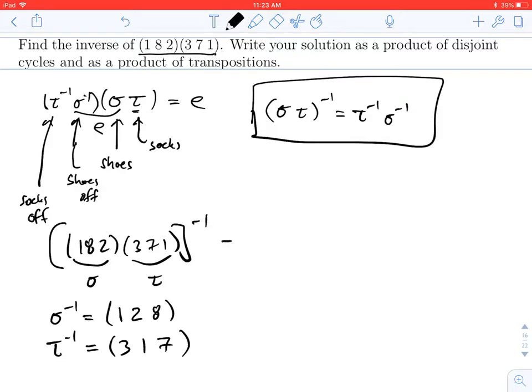All right. So my inverse is going to be given up here by tau inverse, so 3-1-7, followed by sigma inverse, 1-2-8. Now this is not a product of disjoint cycles because you see we have the 1 in both. So we can rewrite this.